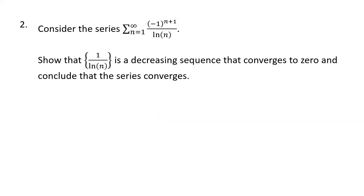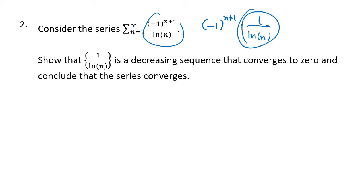A couple more similar problems. Again, we separate out the alternating sign and think about just 1 over the natural log of n. We need to show that these numbers form a decreasing sequence that converges to zero.